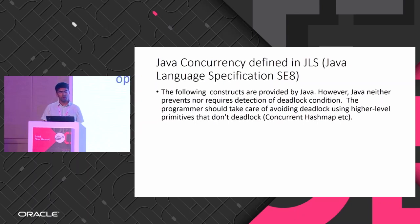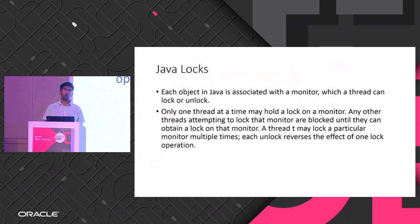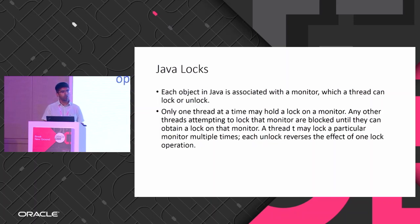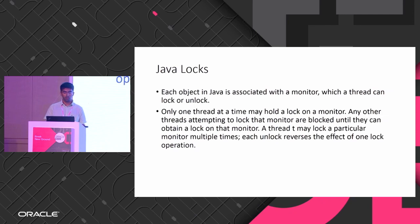In Java, everything is about objects, and each object has a lock. These locks are implemented using monitors. At any point in time, only one thread can have a lock on the monitor, but one thread can acquire the same lock multiple times.